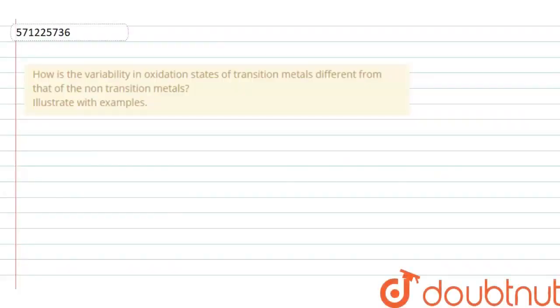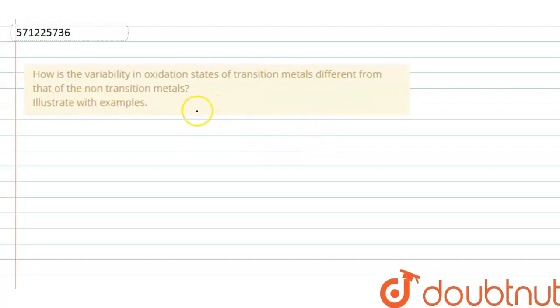In this question we have been asked: how is the variability in oxidation states of transition metals different from that of non-transition metals? Illustrate with examples.